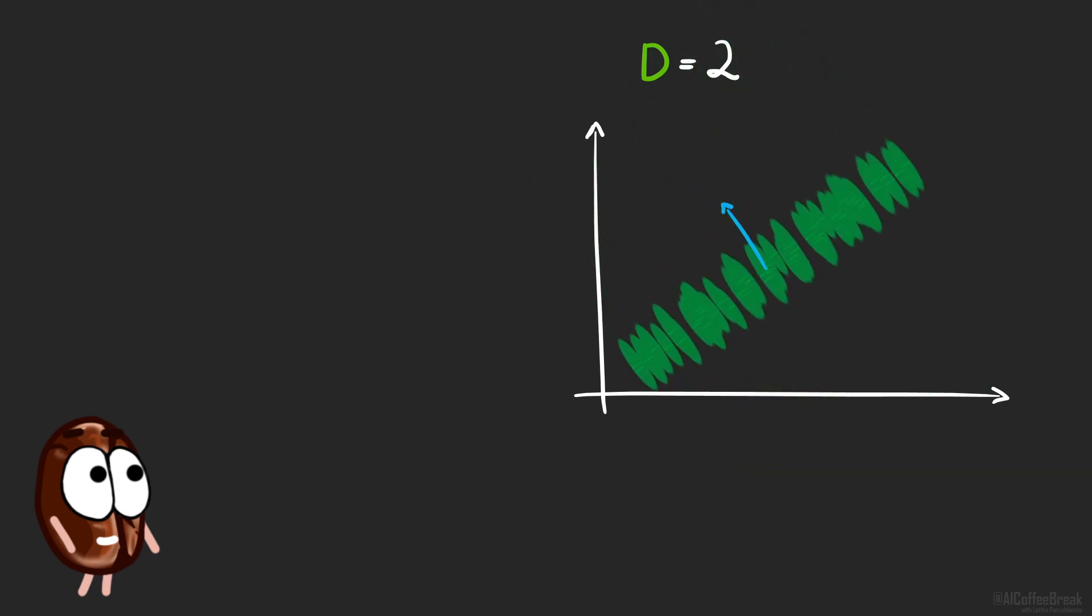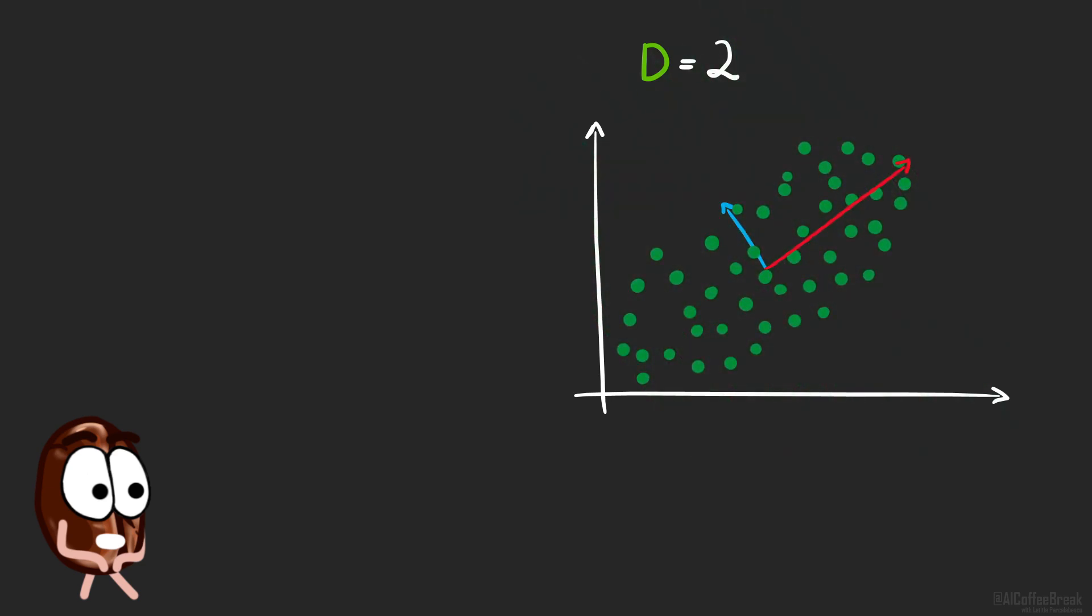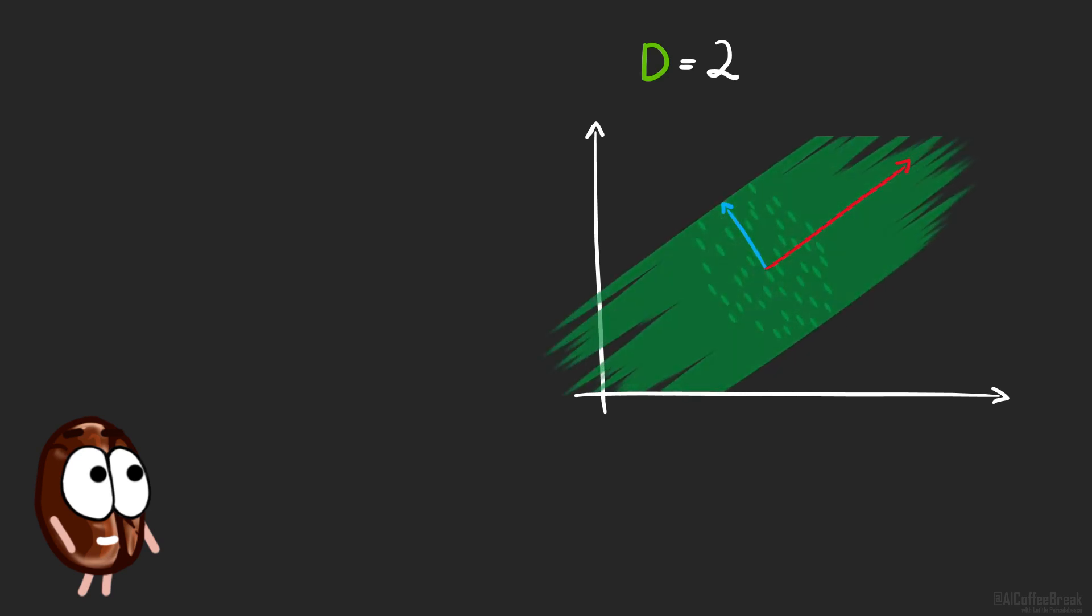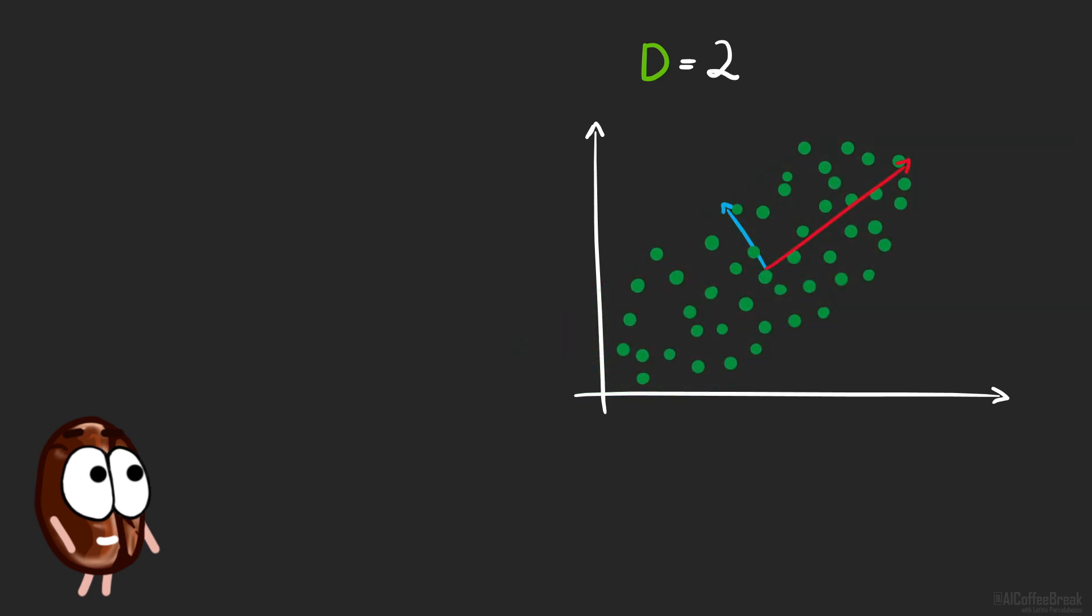And if we would clamp all points onto one line, we would not lose that much information. We would lose a lot of information if we would get rid of the other dimension of the spread, because there the spread is much bigger and helps a lot to differentiate the points.